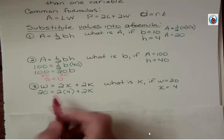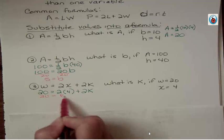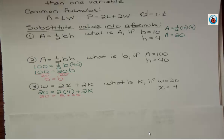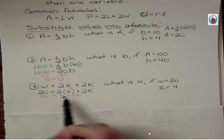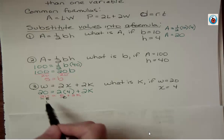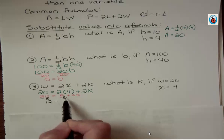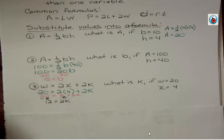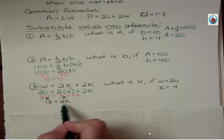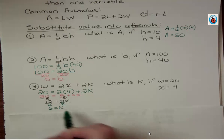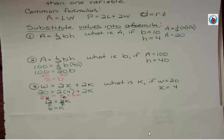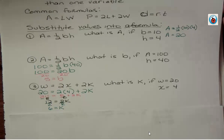Substituting, we get 20 = 2(4) + 2K. I know 2 times 4 is 8, so 20 = 8 + 2K. To get K by itself, subtract 8 from both sides: 20 - 8 = 12. Now we have 12 = 2K. I don't want a coefficient of 2, just one K, so divide by 2. K = 6. Given those values, we can figure out the missing piece.